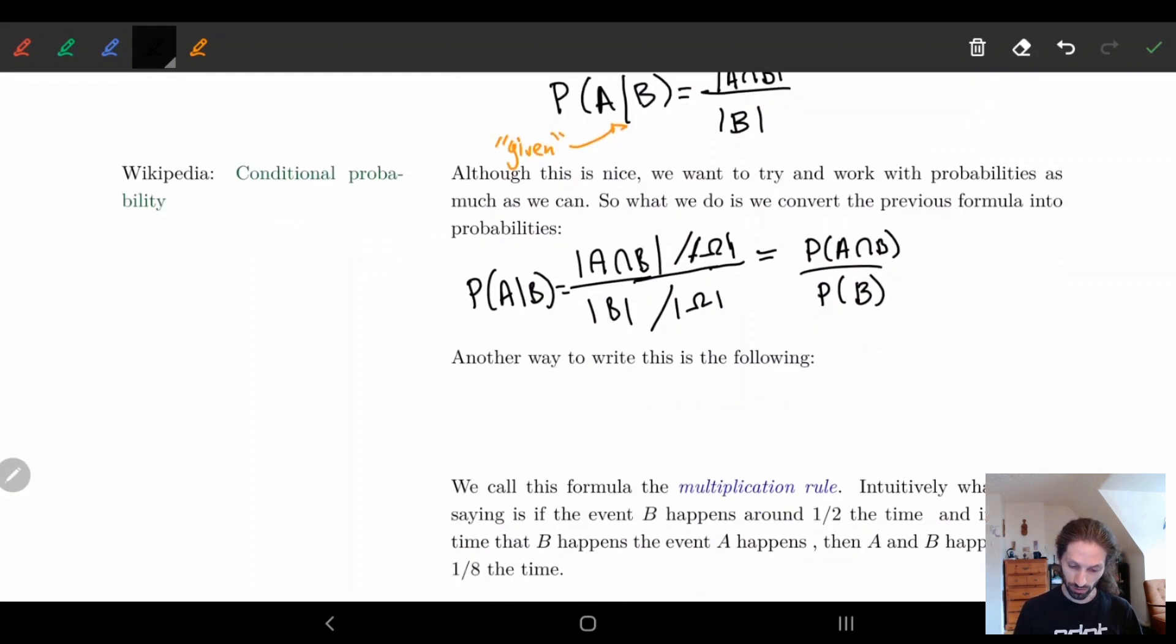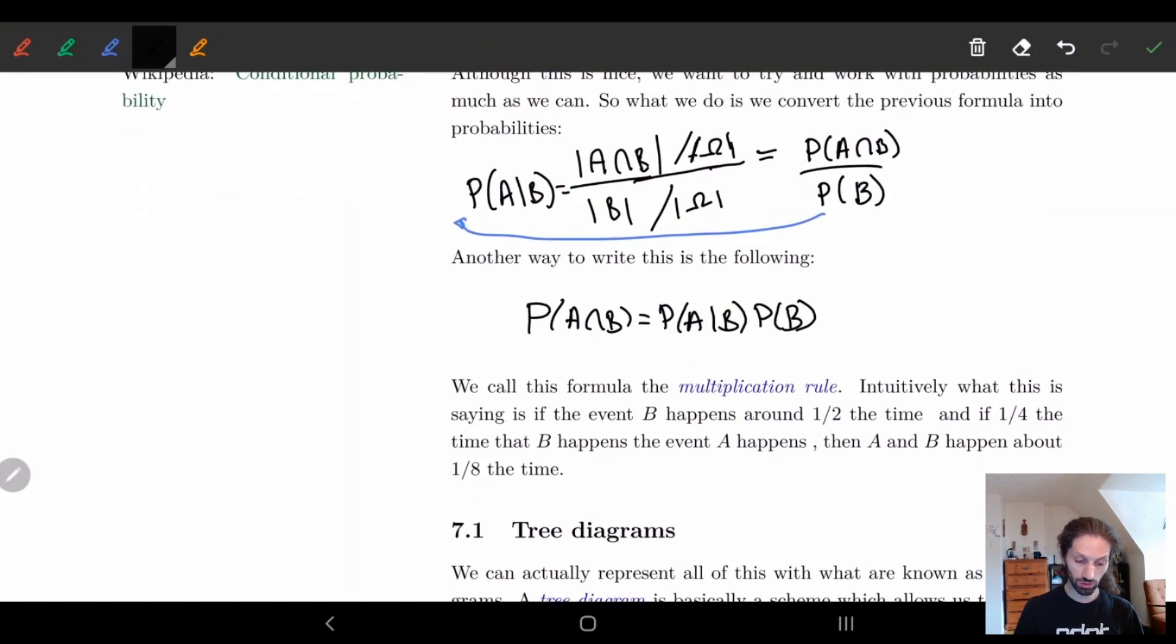We can also reorder this and just move the B to the other side. So I can move the B over here. And I would get the probability of A and B is equal to the probability of A given B times the probability of B. Now normally when we write it in this way we call this the multiplication rule.